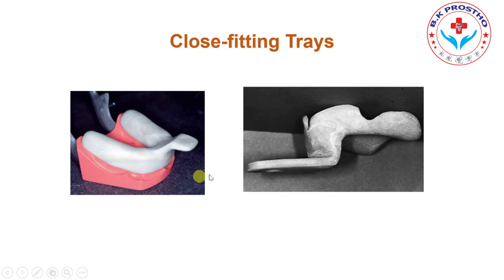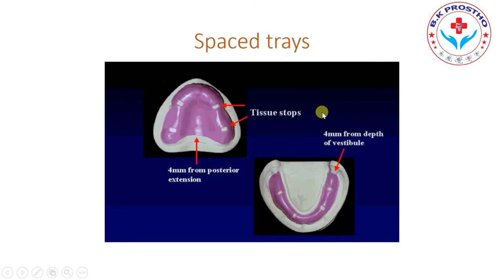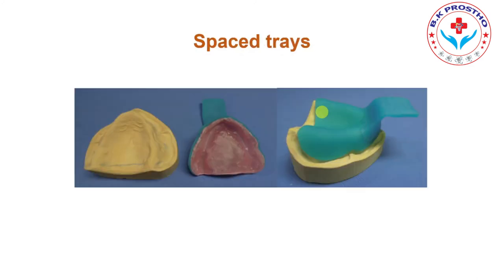This is an example of a close-fitting tray. The handle is also L-shaped so it will not interfere with movement while performing the periphery. For the spaced tray, you apply the spacer — the thickness depends upon the type of impression material you are using for the secondary impression. You also have to make tissue stops by removing the wax anteriorly, posteriorly, and bilaterally, so those areas come in contact with the tissues and maintain the space between the tray and tissues while making the impression.